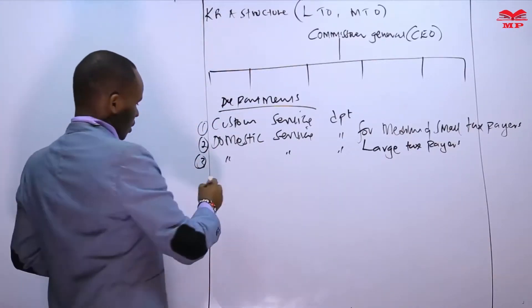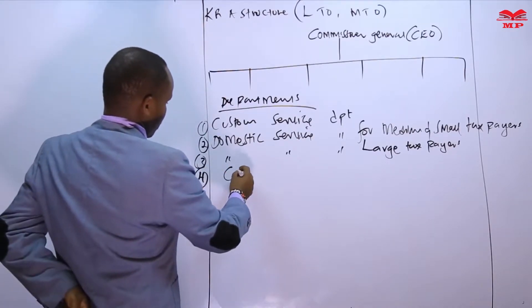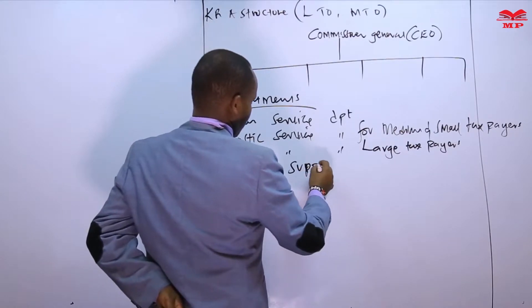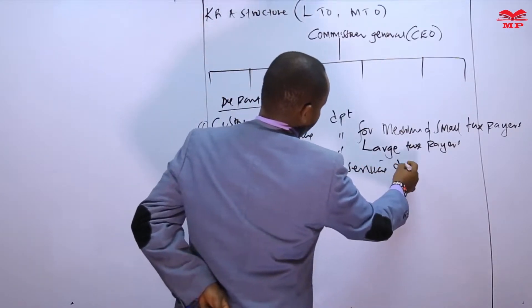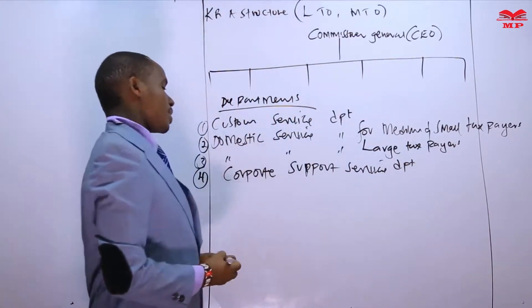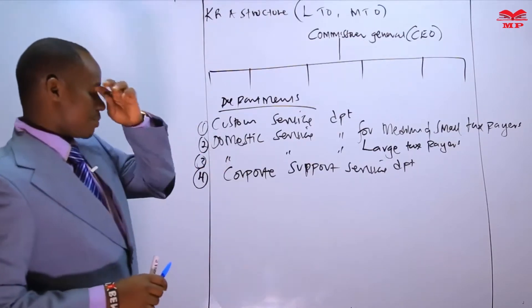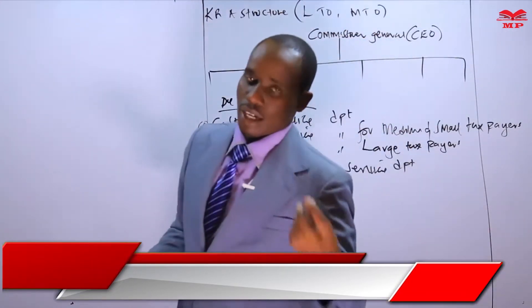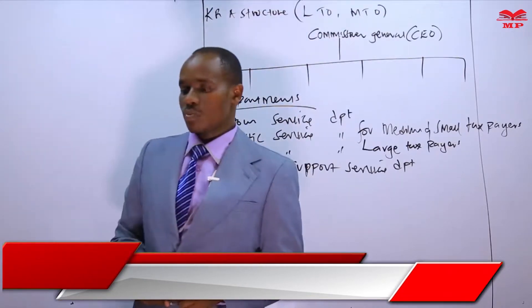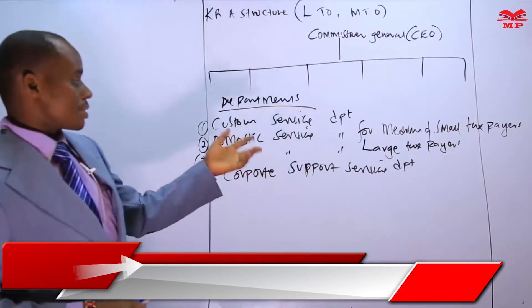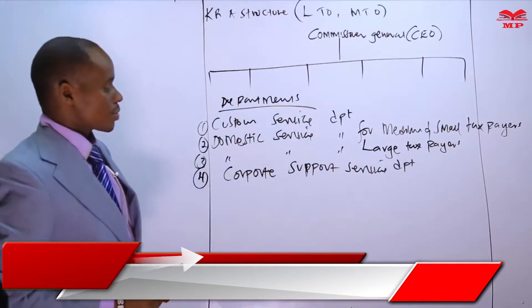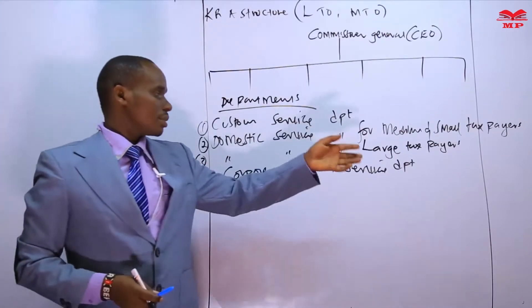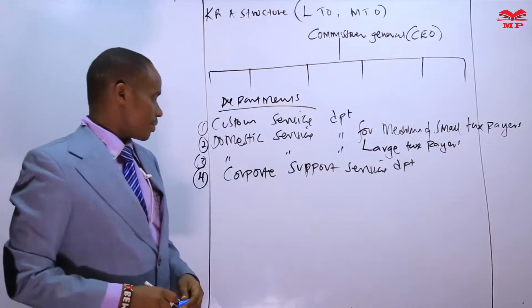Department number four is the Corporate Support Service Department. This particular department is there to handle especially the issues of companies. Companies contribute a lot in terms of tax to our government. Mixing corporates and small taxpayers can bring an element of confusion, so having a separate department for corporate matters ensures that issue is addressed properly.